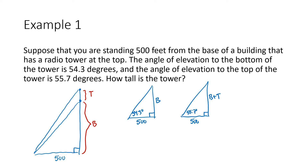When thinking about which trig function to use, we know the opposite side and the adjacent side from the given angle, and we don't know or need the hypotenuse. The trig functions that involve opposite and adjacent are tangent or cotangent. I'm going to use tangent because I have a button for it on my calculator, whereas cotangent would be more complicated to compute directly.